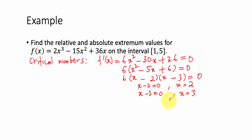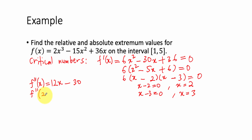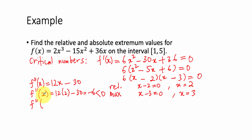We need to check whether we have a maximum or minimum point, so we find the second derivative. We get f''(x) = 12x − 30. Substituting the critical numbers: f''(2) = 12(2) − 30 = −6, which is less than 0, so this is the Relative Maximum. Then f''(3) = 12(3) − 30 = 36 − 30 = +6, which is greater than 0, so this is the Relative Minimum.